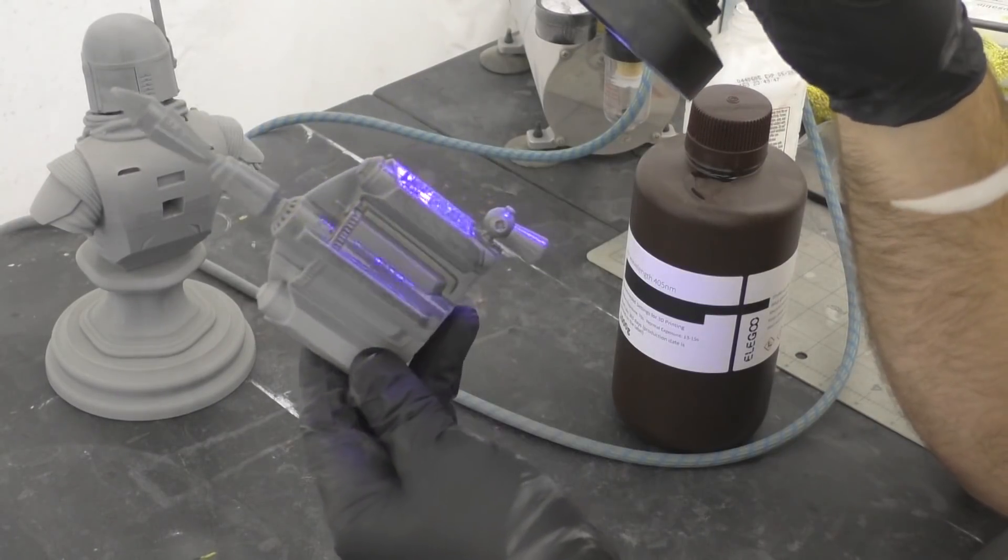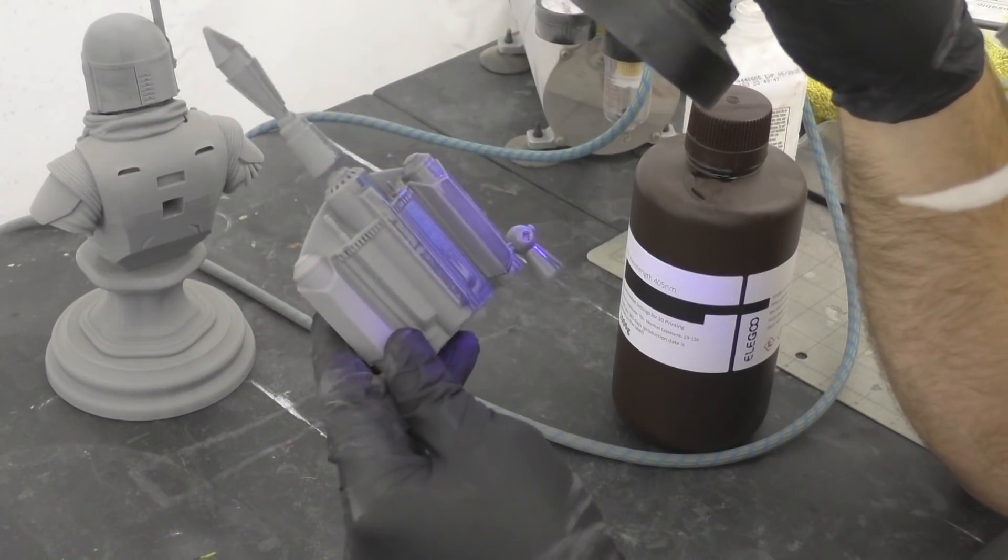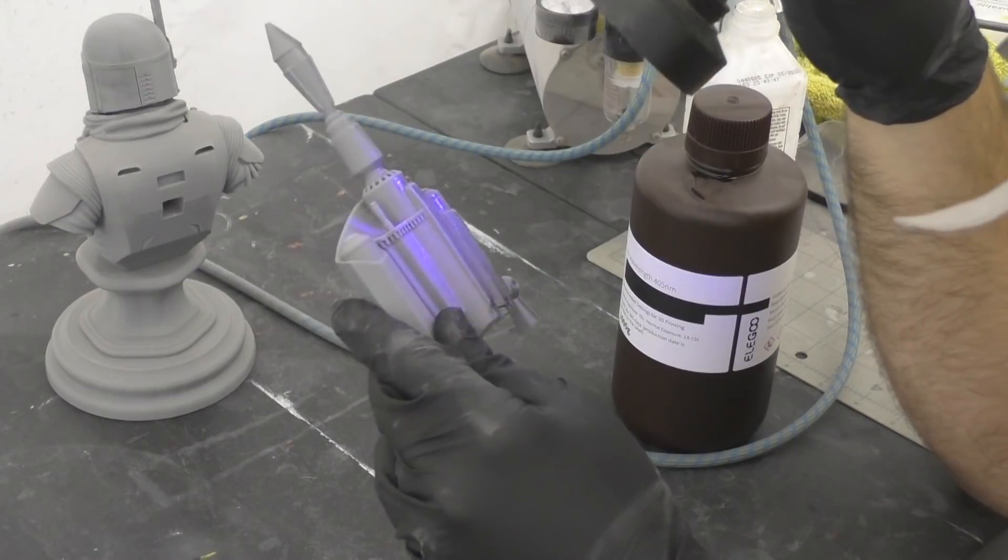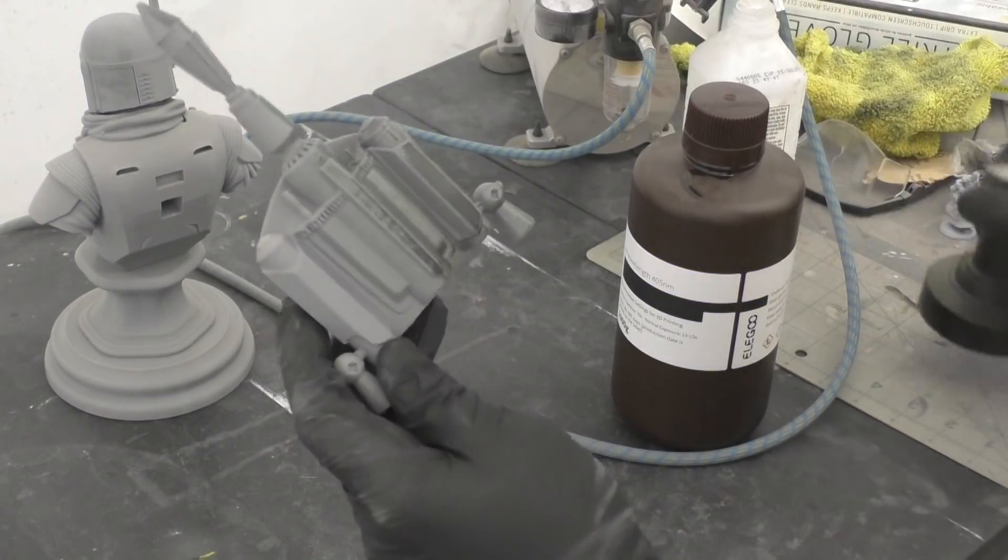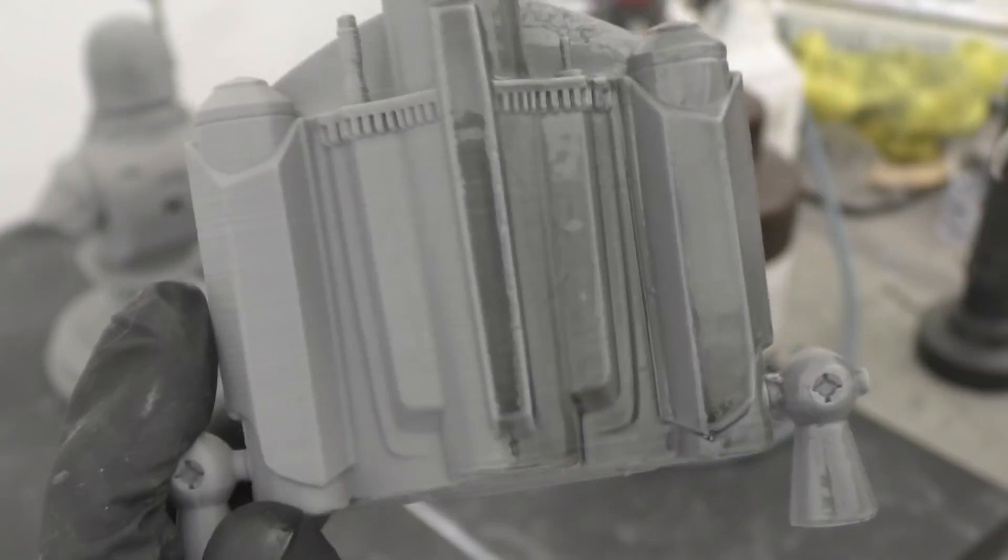After about three light coats, curing the resin between each coat, here's how the jetpack looks. It's kind of hard to see if it worked due to the resin being translucent, so I'm going to apply just one single coat of filler primer so we can compare the two sides a little better.